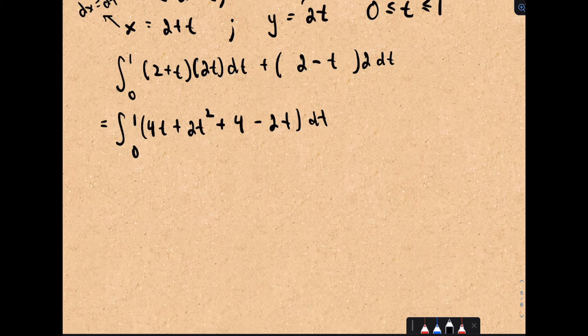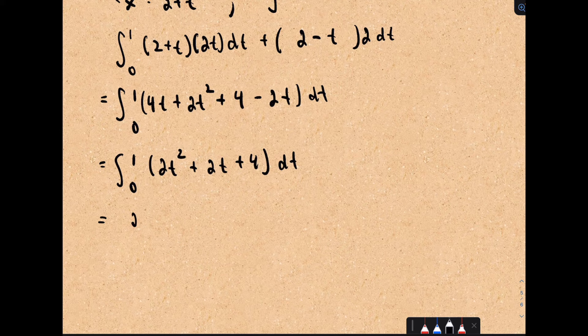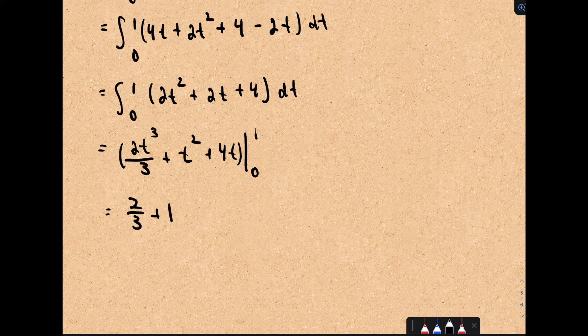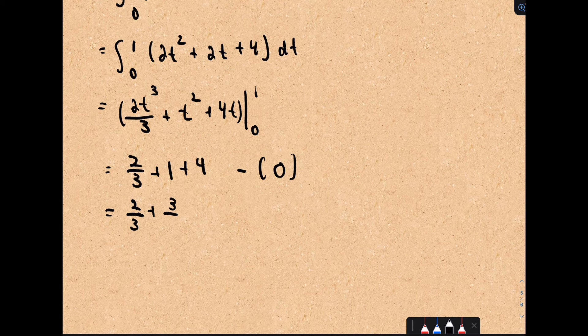Cleaning up, we have the integral from 0 to 1 of (2t² + 2t + 4) dt. Integrating: 2t³/3 + t² + 4t, evaluated from 0 to 1. Plugging in 0 gives all zeros, so we get 2/3 + 1 + 4 = 2/3 + 3/3 + 12/3 = 17/3. So 17/3 is the value of this line integral.